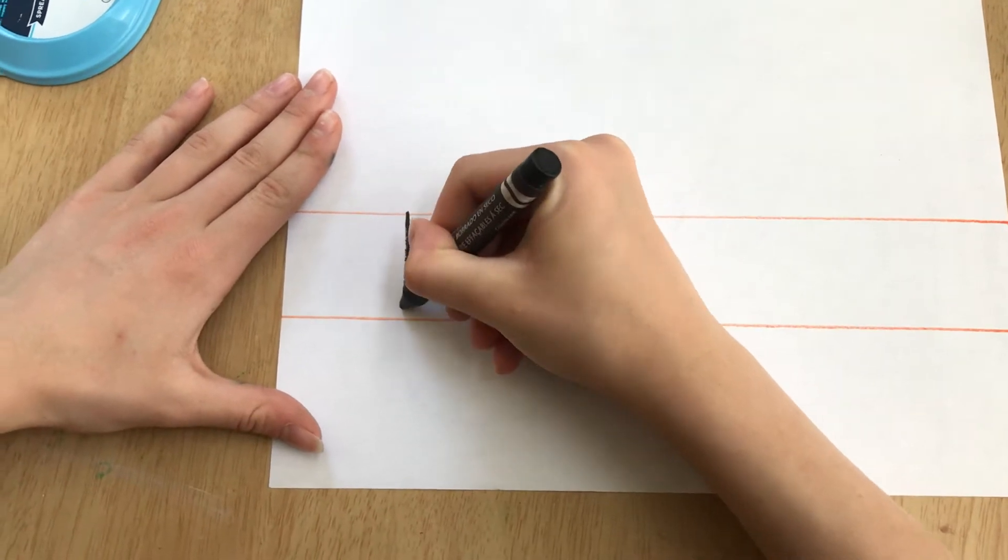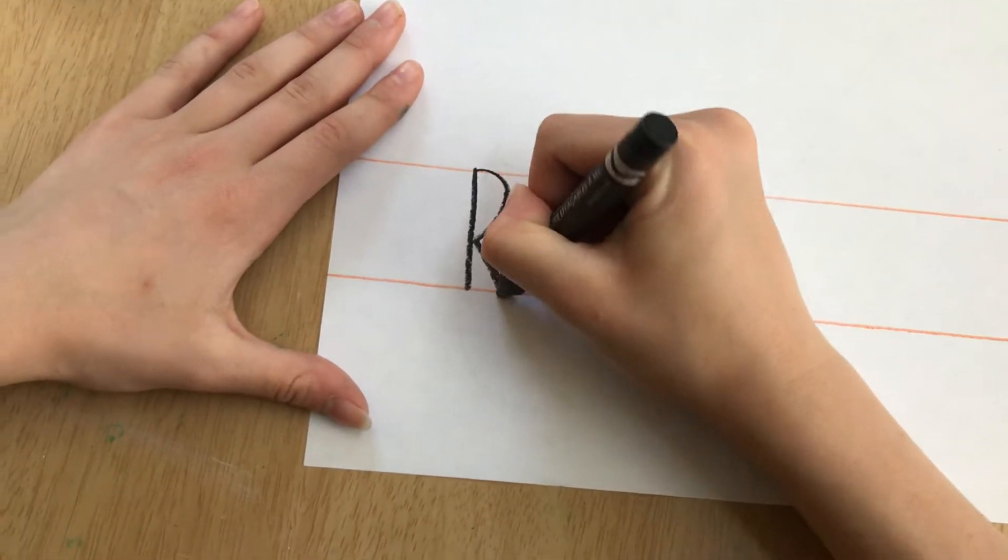Let's first start by writing our name. Let's make sure that we keep our name in between the lines. So I'll start at the top line and stop when I get to the bottom line.